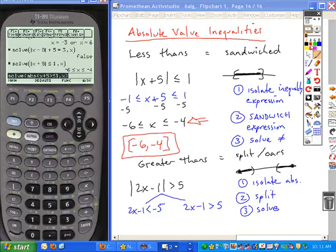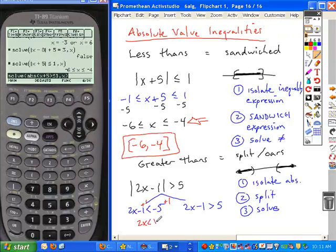And now you can solve each one individually. So if we add one to both sides, we get 2x is less than negative 4. Divide by 2. We get x is less than negative 2 as one interval. The other interval, again, we're solving. Add one to both sides. Divide by 2. We get x is greater than 3. So here's your two solution sets.